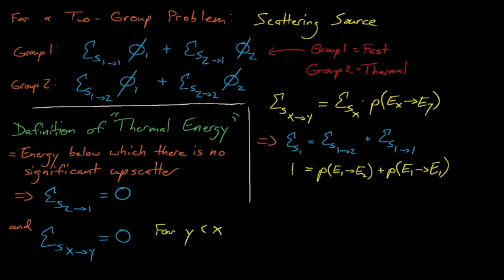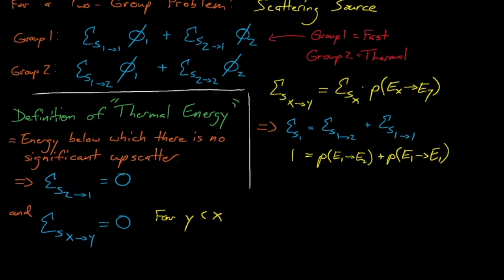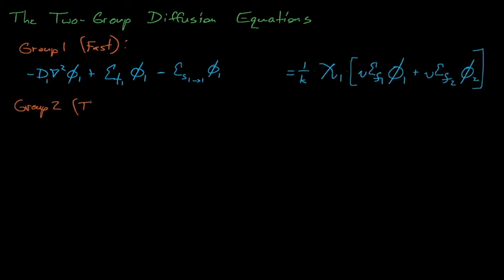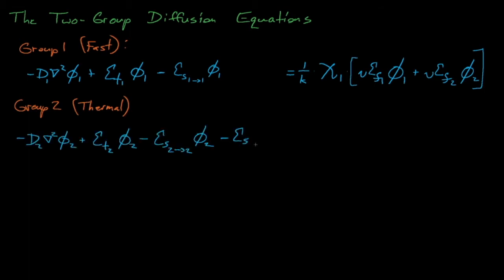Another consequence of how we define our energy groups shows up in the fission source via the chi-spectrum. Neutrons that are released from fission events are generally born in the MeV energy range, which means that chi for thermal energies equals zero. For our simple two-group model with only fast and thermal energies, the thermal cutoff is so far below the MeV range that we can safely assume that no fission neutrons are emitted at thermal energies. With these approximations, we can now write the two-group diffusion equation for the fast group 1 and for the thermal group 2. These equations both contain the neutron leakage term and a collisional term, but differ in the scattering source and the fission source terms, because neutrons can't upscatter from group 2-to-1, and because chi for group 2 equals zero.